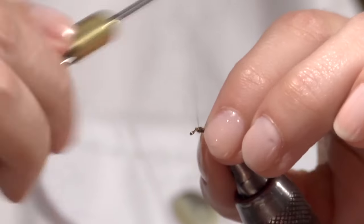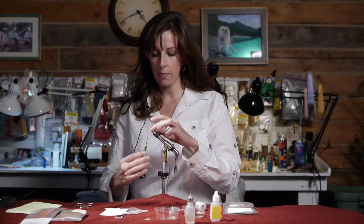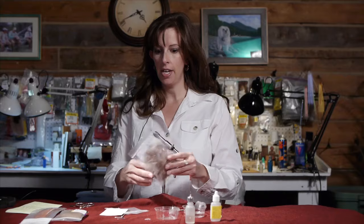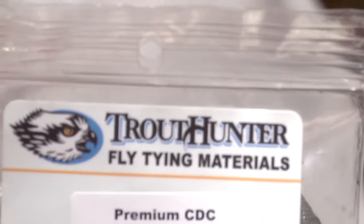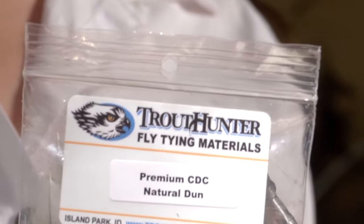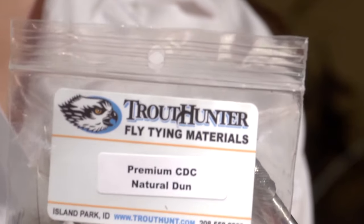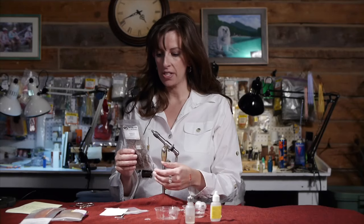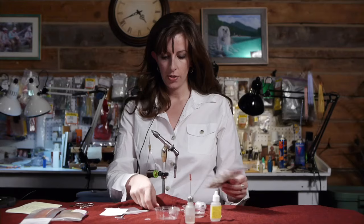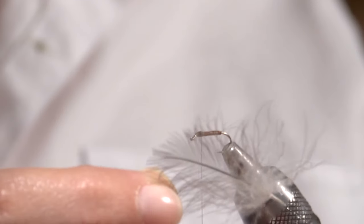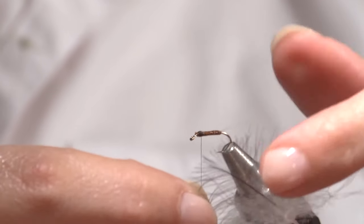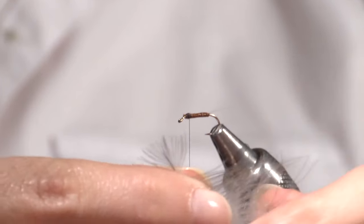And the next step is the wing. And I'm using a CDC Natural Dun from Trout Hunters. It's a really good CDC. And it makes a beautiful wing. So I take one of my little feathers and I strip the fibbits off one side.